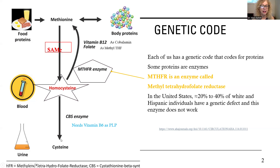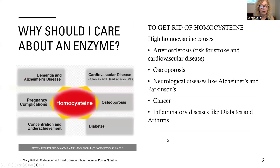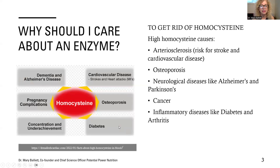We want to either move homocysteine back to methionine or get rid of it from the blood into the urine, which needs more vitamins — folic acid, B12, and vitamin B6 as pyridoxal 5-phosphate. Why should I care about MTHFR? Because I do not want homocysteine. Homocysteine actually causes cardiovascular disease by leading to atherosclerosis — it damages the wall of blood vessels and causes plaque buildup. Additionally, it damages bone and can lead to osteoporosis, damages nerves leading to dementia and Alzheimer's, and because it damages all cells, it can lead to cancer, inflammation, diabetes, and arthritis.